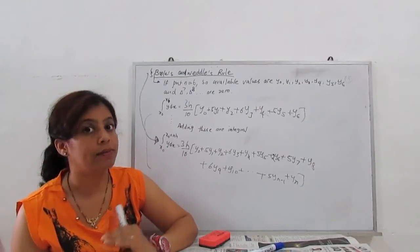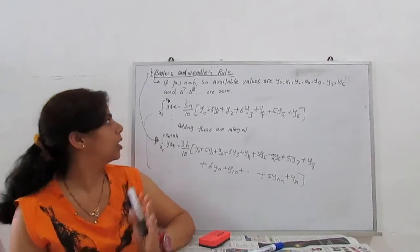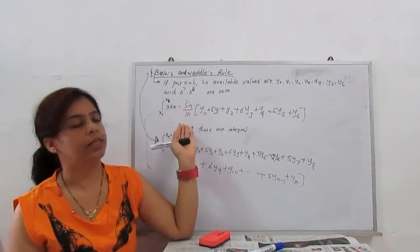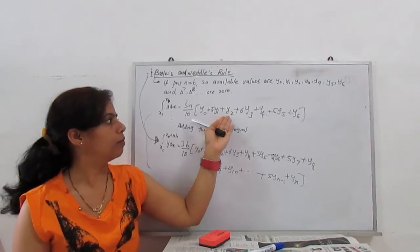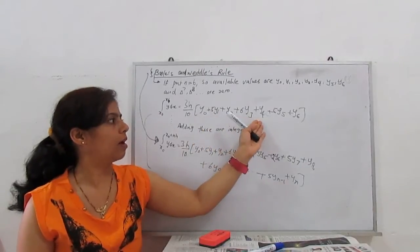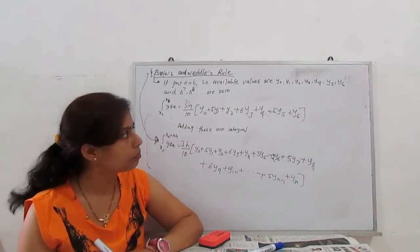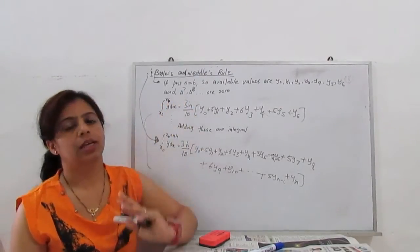So what is our formula when we substitute from 0 to 6? x0 to x6, dx is 3h by 10, y0 plus 5y1 plus y2 plus 6y3 plus y4 plus 5y5 plus y6. Now similarly, this is x0 to x6.